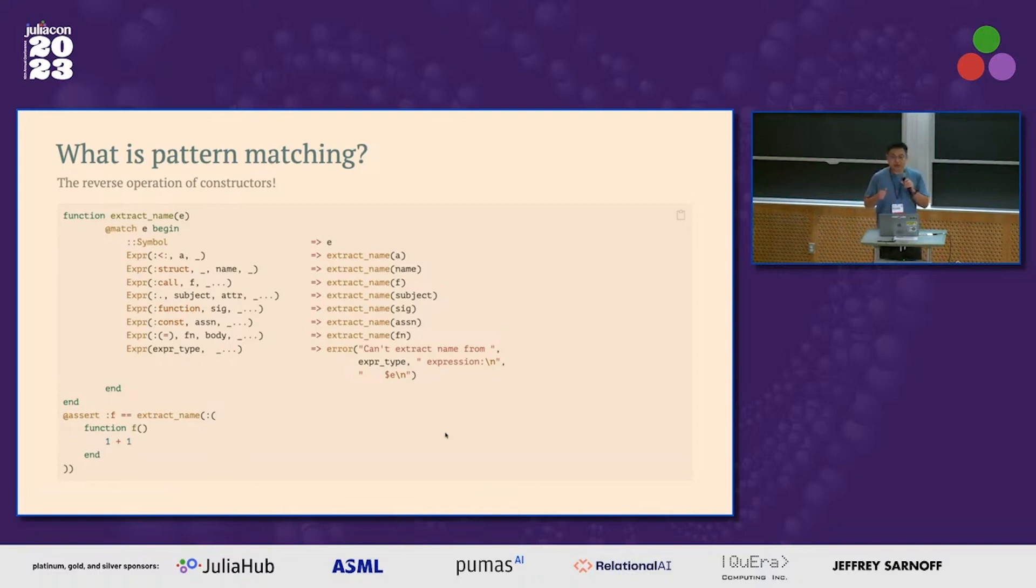But in the match context, we will do the reverse operation instead. So here instead of construct this expression, by inserting the value of A will give you the value of A. And underscore means we don't care about that value, which is just wild card.